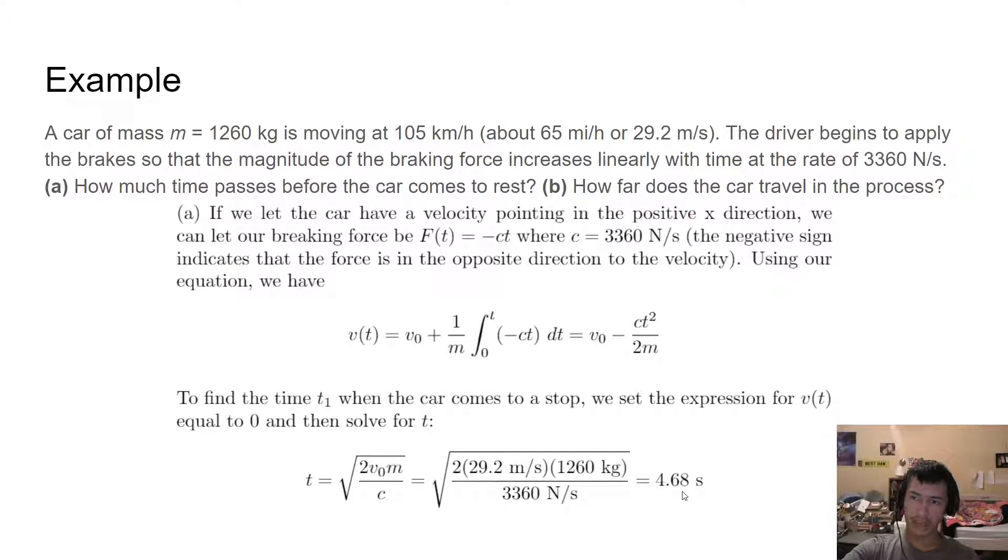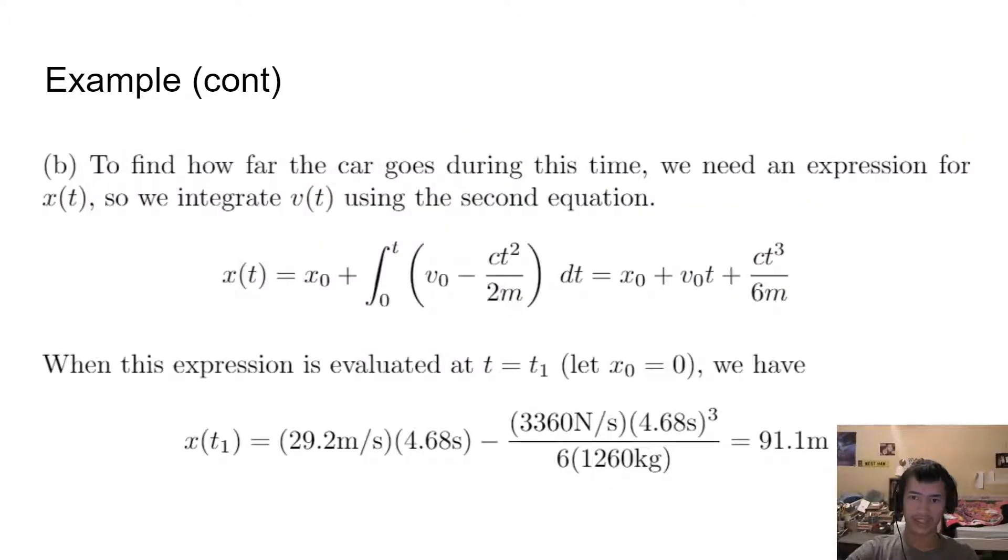Now, we're going to go to part b. To find out how far the car goes during our time of 4.68 seconds, we need an expression for x of t, because we need some way of finding x of t. What we do here is we're going to take x of t equals x naught plus the integral of zero to t of v of t dt. We're not using the ugly equation. We're using the nicer equation back when it was just v of t rather than plugging in the first equation. So we just have our integral v naught minus ct squared over 2m from zero to t.